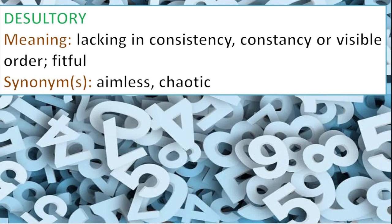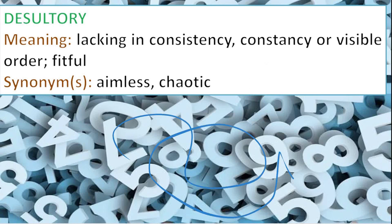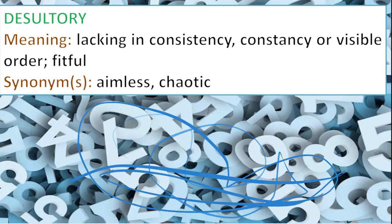The next word is desultory — I love the way it's pronounced. Desultory means aimless or chaotic — lacking in consistency, constancy or visible order. If you basically lack a definite plan and flip from one thing to the other, your actions are desultory. You're just wandering here and there and jumping from one thing to the other — being lost. Your actions or the way you're behaving is just desultory.